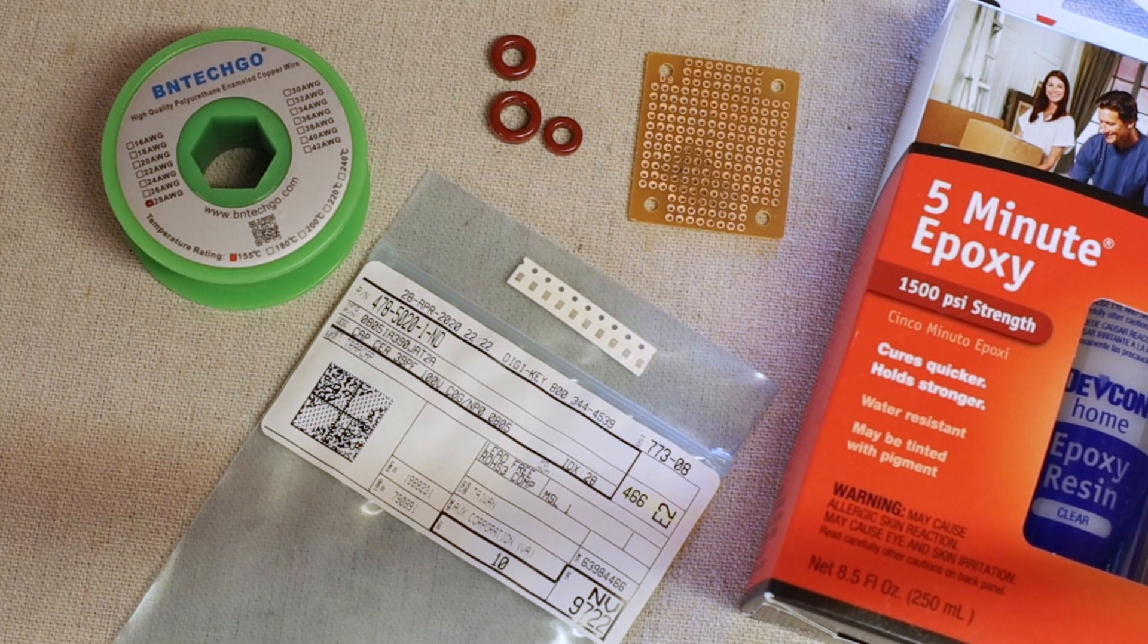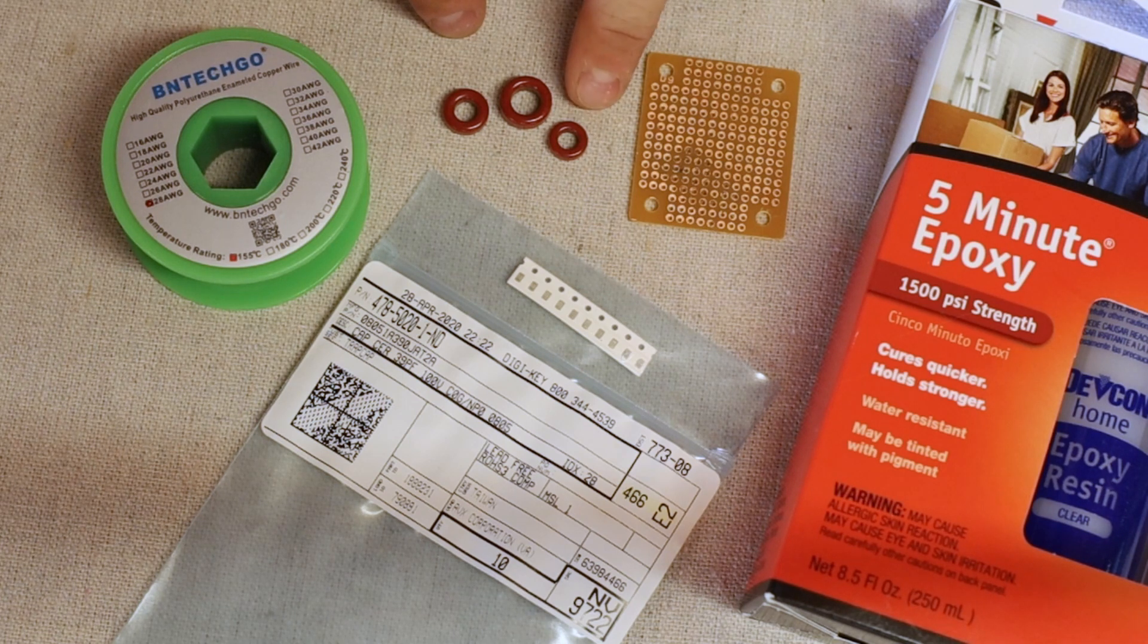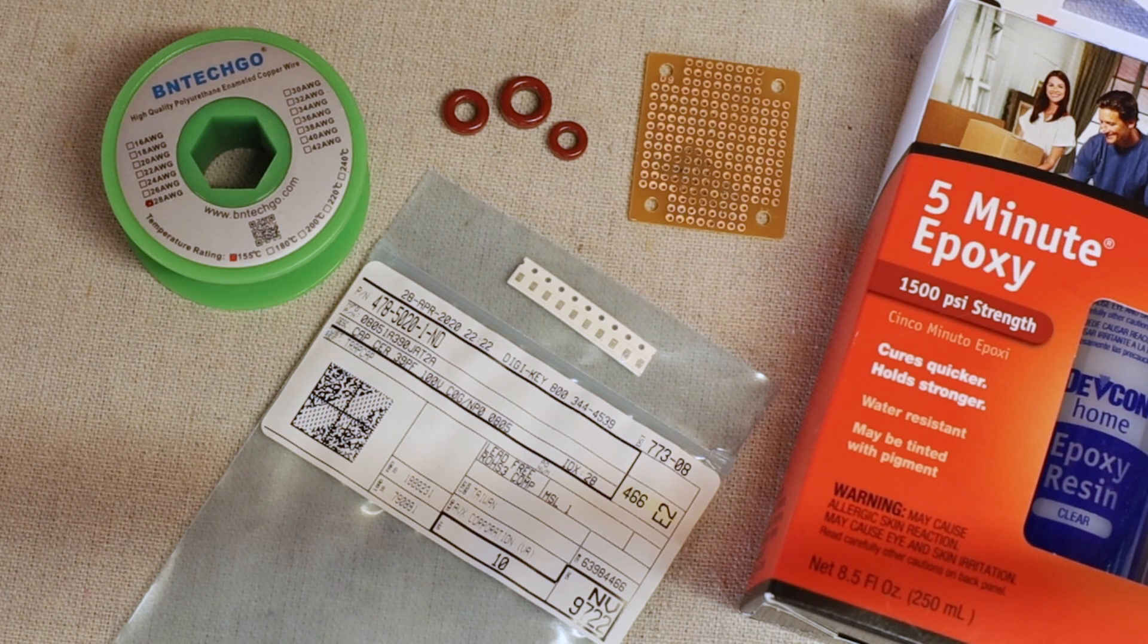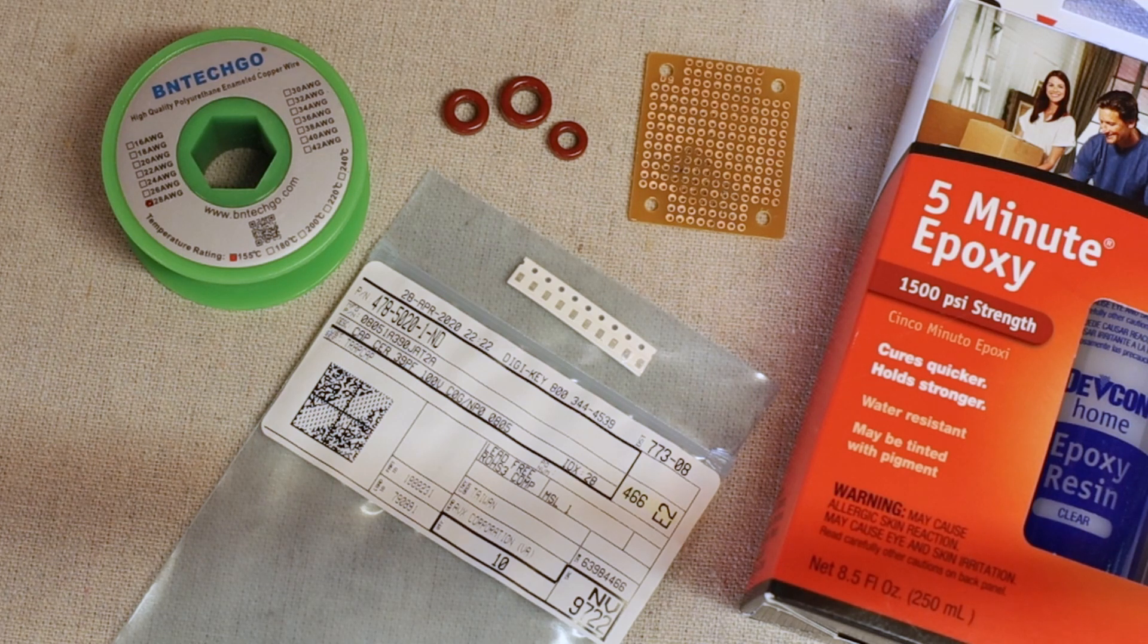Before we get started, let's talk about what we're going to need for this project. First things first, we need inductors and capacitors to make a resonant LC circuit that will function as a trap. These red-2 mix iron powder toroids come in 37 size, 44 size, and 50 size. Take your pick. I've found that the 37 size toroids work fine with QRP at 5 watts or less. For a little more power and efficiency, you may want to step up the size a little bit. It'll slightly increase the size and bulk of your trap, but really not by much.